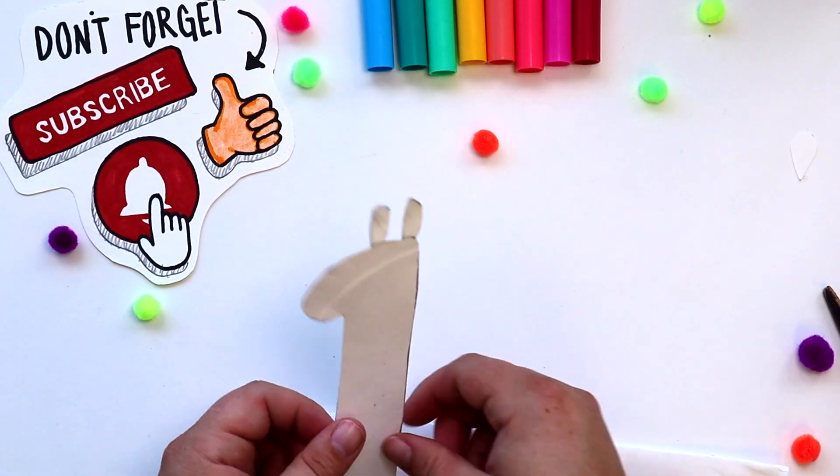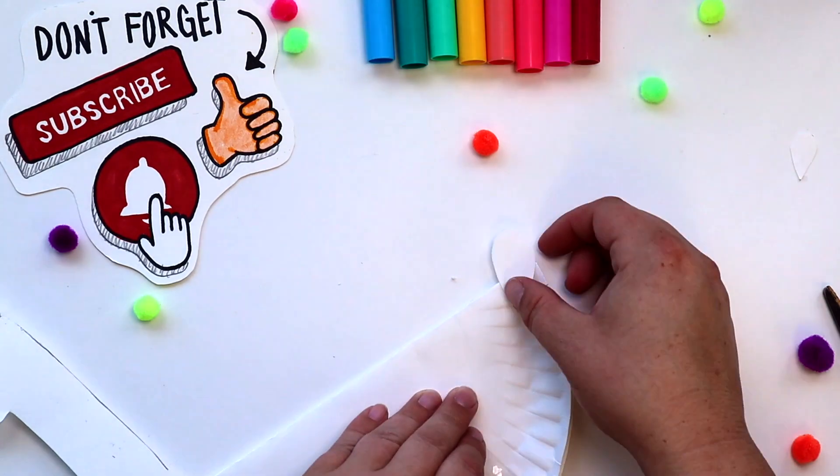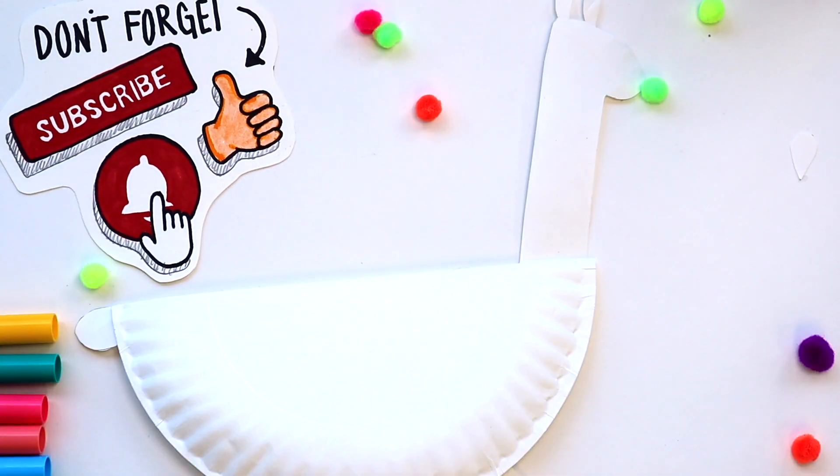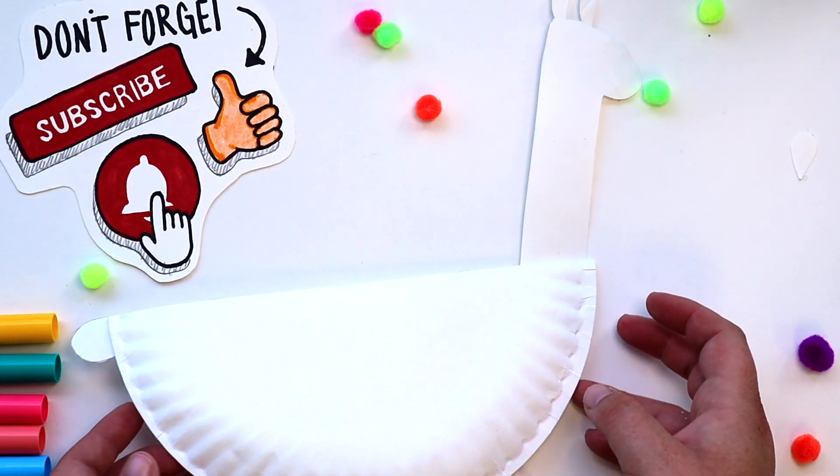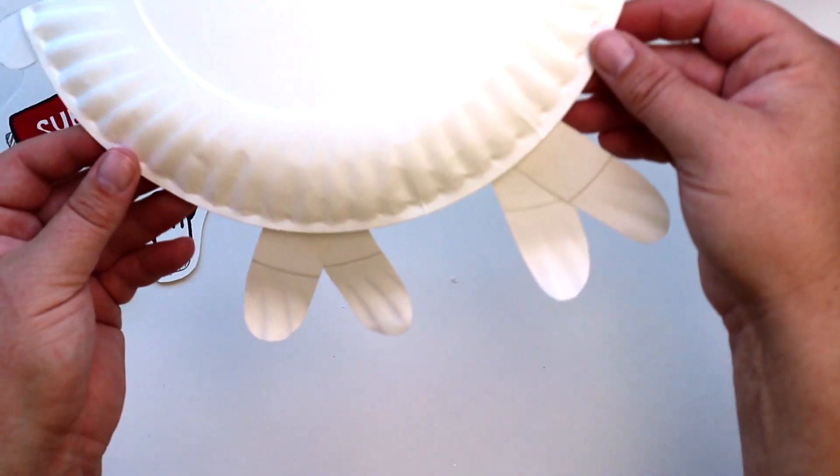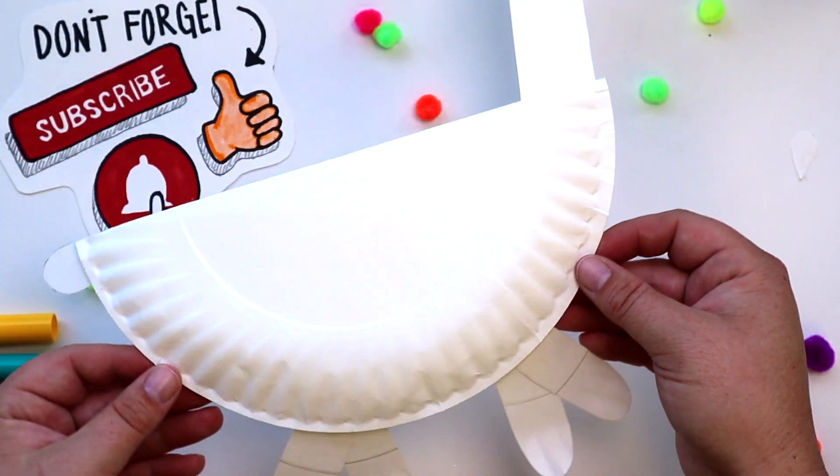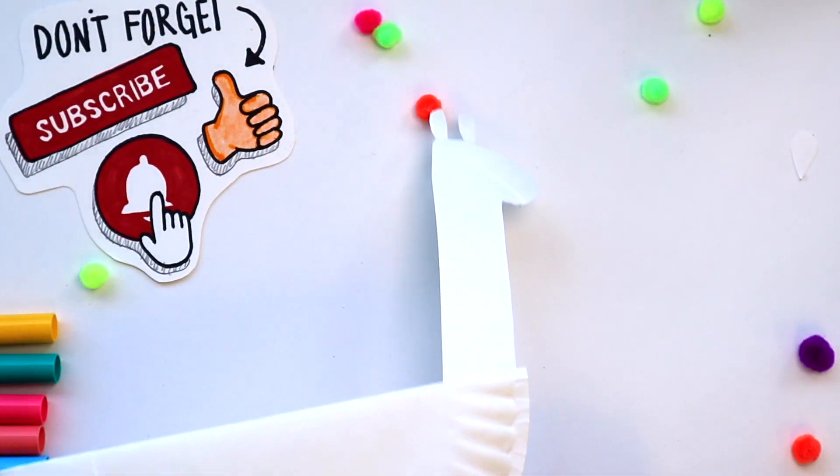All right, let's start gluing everything where it needs to go. So our head and our tail and glue on our four legs. We can make it look like the llama's walking, so separate the legs a little bit. All right, guess what? It's time to decorate.